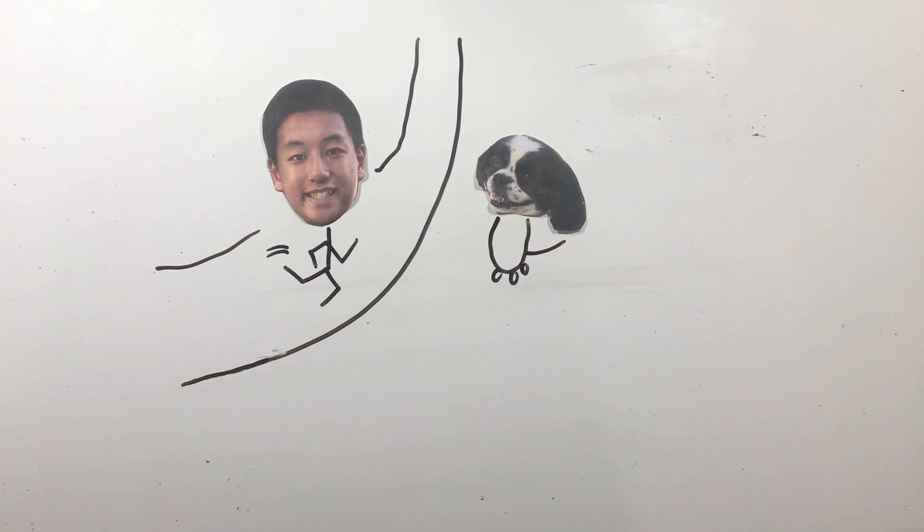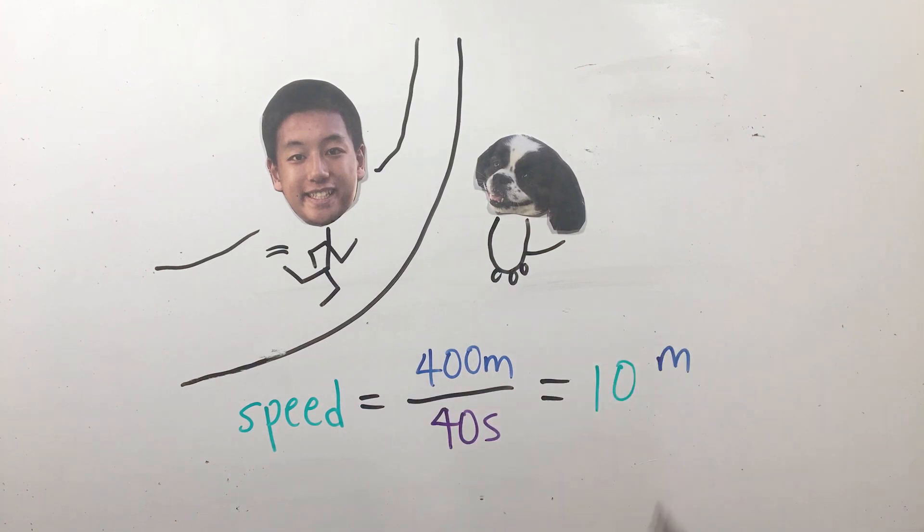To explain this, let's take a look at the track example again. If I ran the entire 400 meter lap in 40 seconds, my speed would be the distance divided by time, or 10 meters per second.